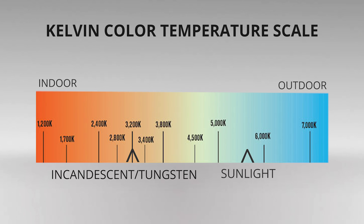Science tells us that light is a vast spectrum that ranges from what we see into invisible infrared and ultraviolet light. In between is the entire rainbow of colors graded by color temperature on the Kelvin scale. On this scale, incandescent or tungsten light sits at about 3200 Kelvin, while sunlight varies as it travels across the sky but is generally placed at 5600 Kelvin.